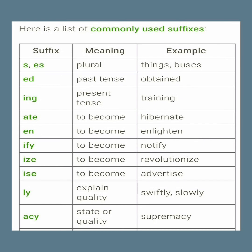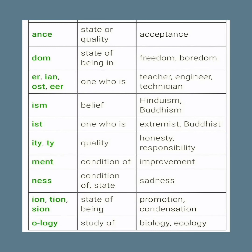-Ise means 'to become'; example: advertise. -Ly explains quality; examples: swiftly, slowly. -Acy means 'state or quality'. -Ance means 'state or quality'; example: acceptance. -Dom means 'state of being'; examples: freedom, boredom. -Er, -ian, -eer mean 'one who is'; examples: teacher, engineer, technician. -Ism means a belief system; examples: Hinduism, Buddhism. -Ist means 'one who is'; examples: extremist, Buddhist.